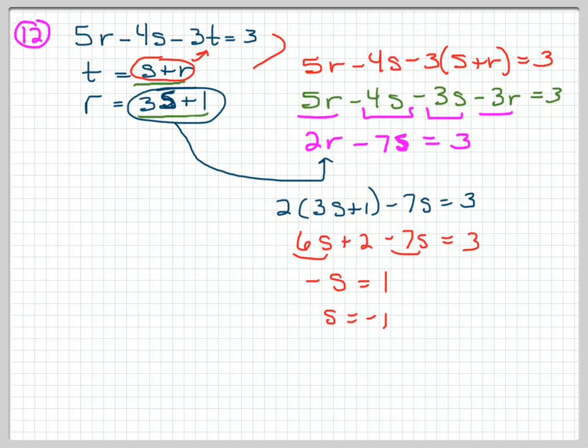Alright, let's keep going now. Now that I know what s is, I can come up here and I can find out what r is. It says r is 3 times s, and I get negative 3 plus 1, so it looks like r is negative 2. That looks like another answer.